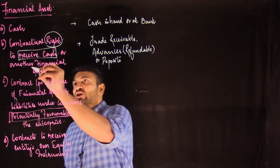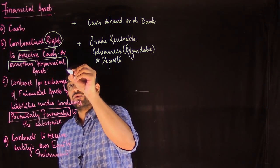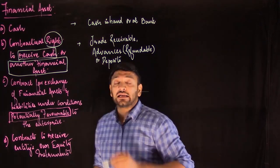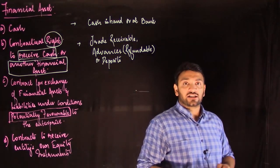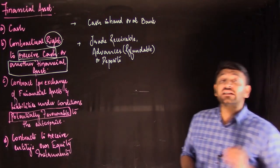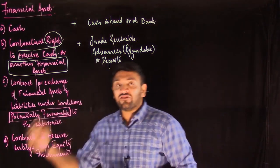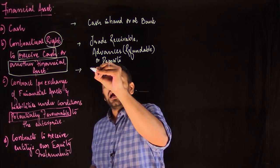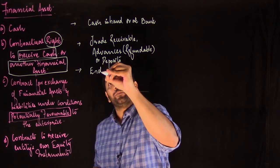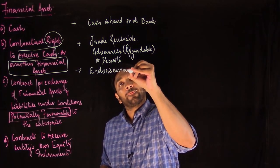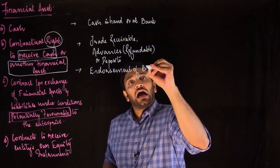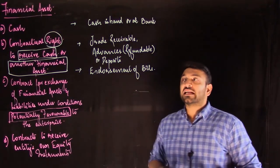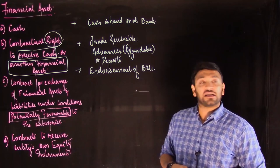A contractual right to receive another financial asset means items settled other than cash but in a financial asset. For example, instead of delivering cash, a party gives me a bill receivable — an endorsement of a bill. Even in that situation, you say it is a contractual right to receive another financial asset.